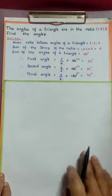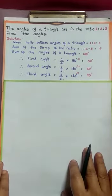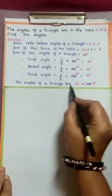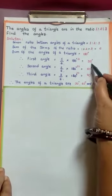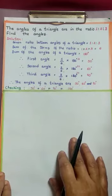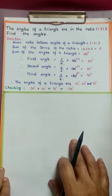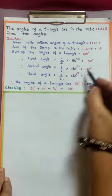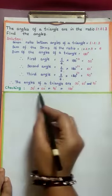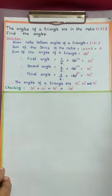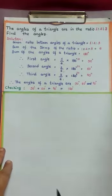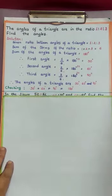This is the way we can find all 3 angles of a triangle. The angles of a triangle are 30 degrees, 60 degrees, and 90 degrees. For checking: by adding 30 degrees, 60 degrees, and 90 degrees we get 180 degrees. This verification is very important.